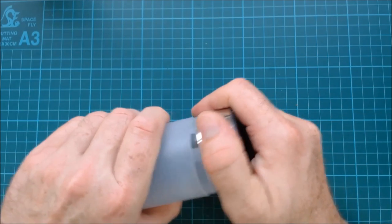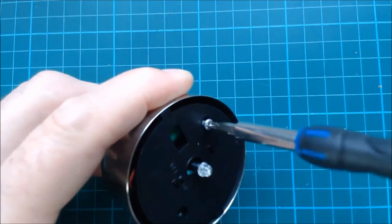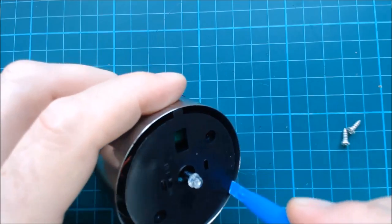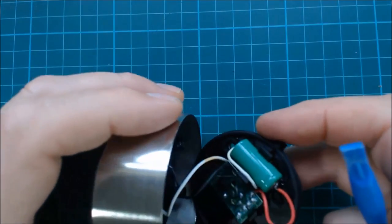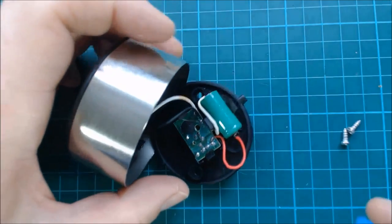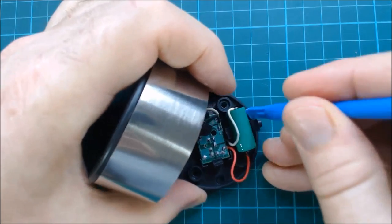First unclip the top. And then unscrew the two retaining screws. You can see the LED and on off switch poking through the base plate. Then you can lever out the base plate. Try not to pull on the wires because they can become detached. The battery is held in with a couple of clips.